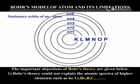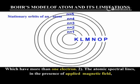Bohr's theory could not explain the atomic spectra of higher elements such as helium, lithium, beryllium, boron, carbon and so on, which have more than one electron.